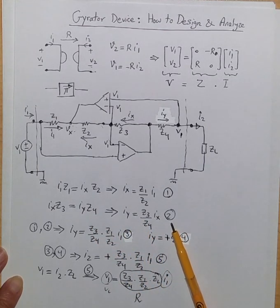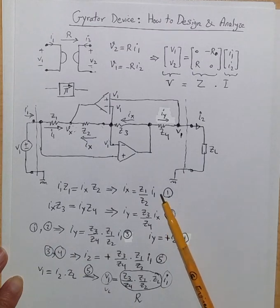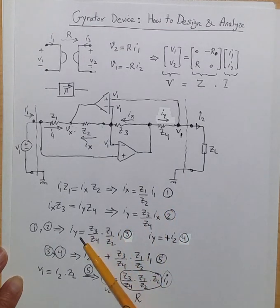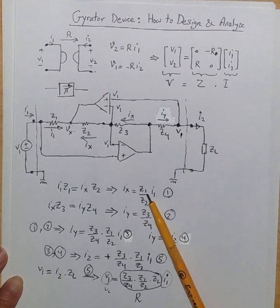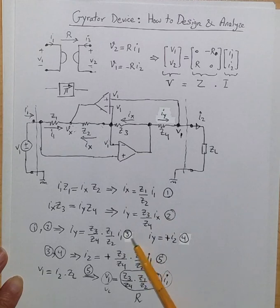Let's name that as relation two. So from these one and two we conclude by substituting for Ix from one that Iy is Z3 divided by Z4 replacing Ix from here times Z1 divided by Z2 times I1. Let's name this three.